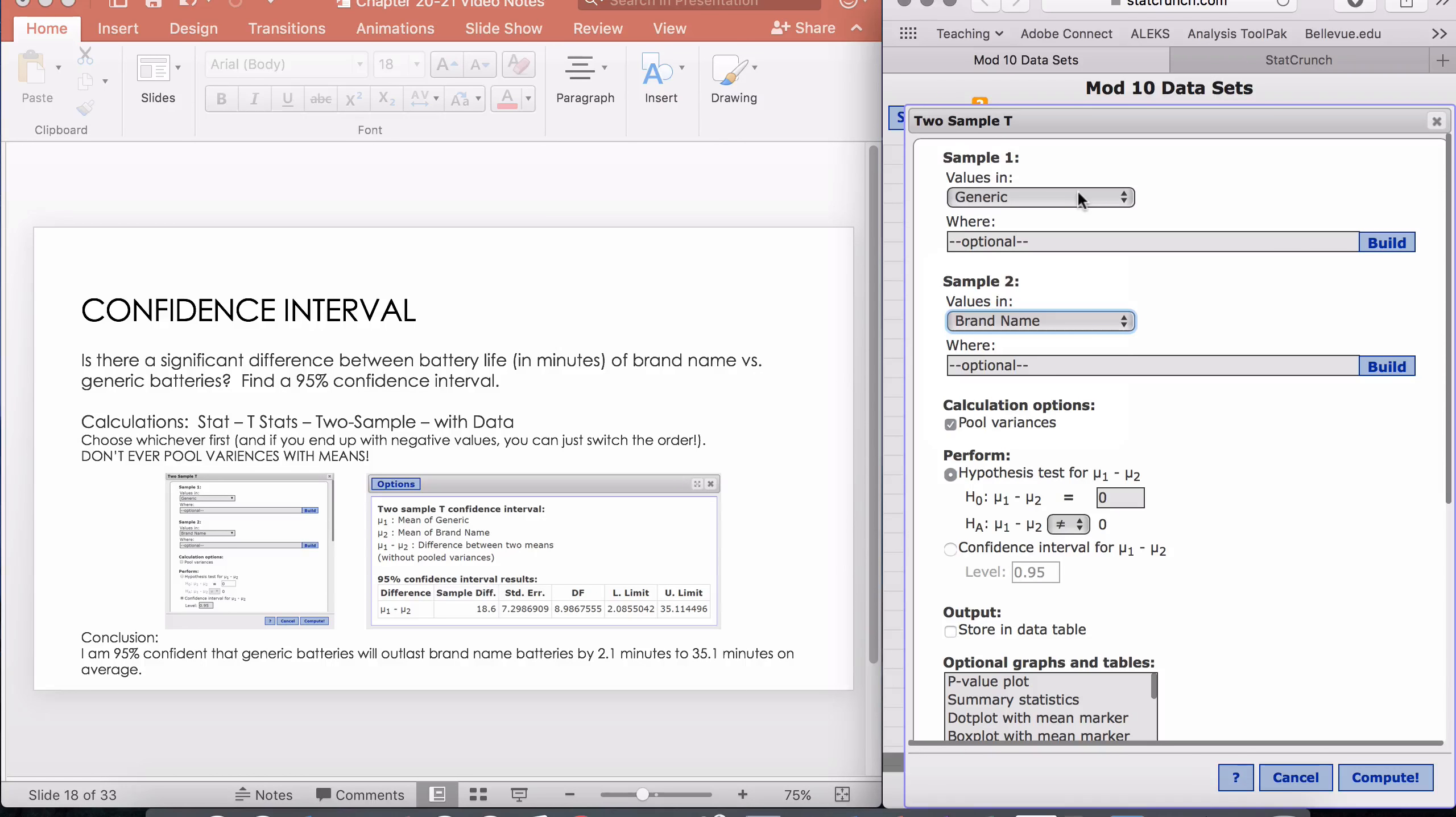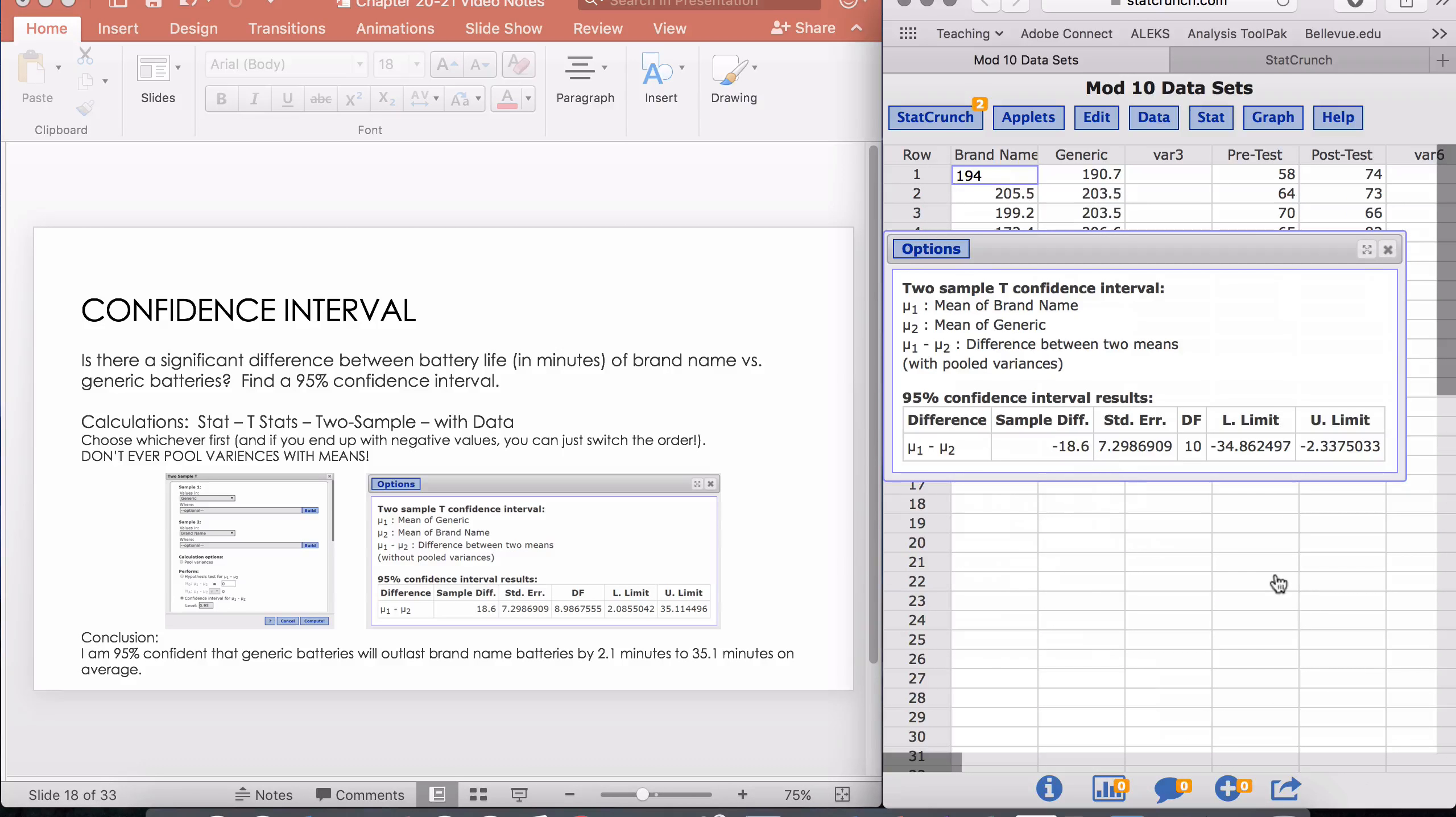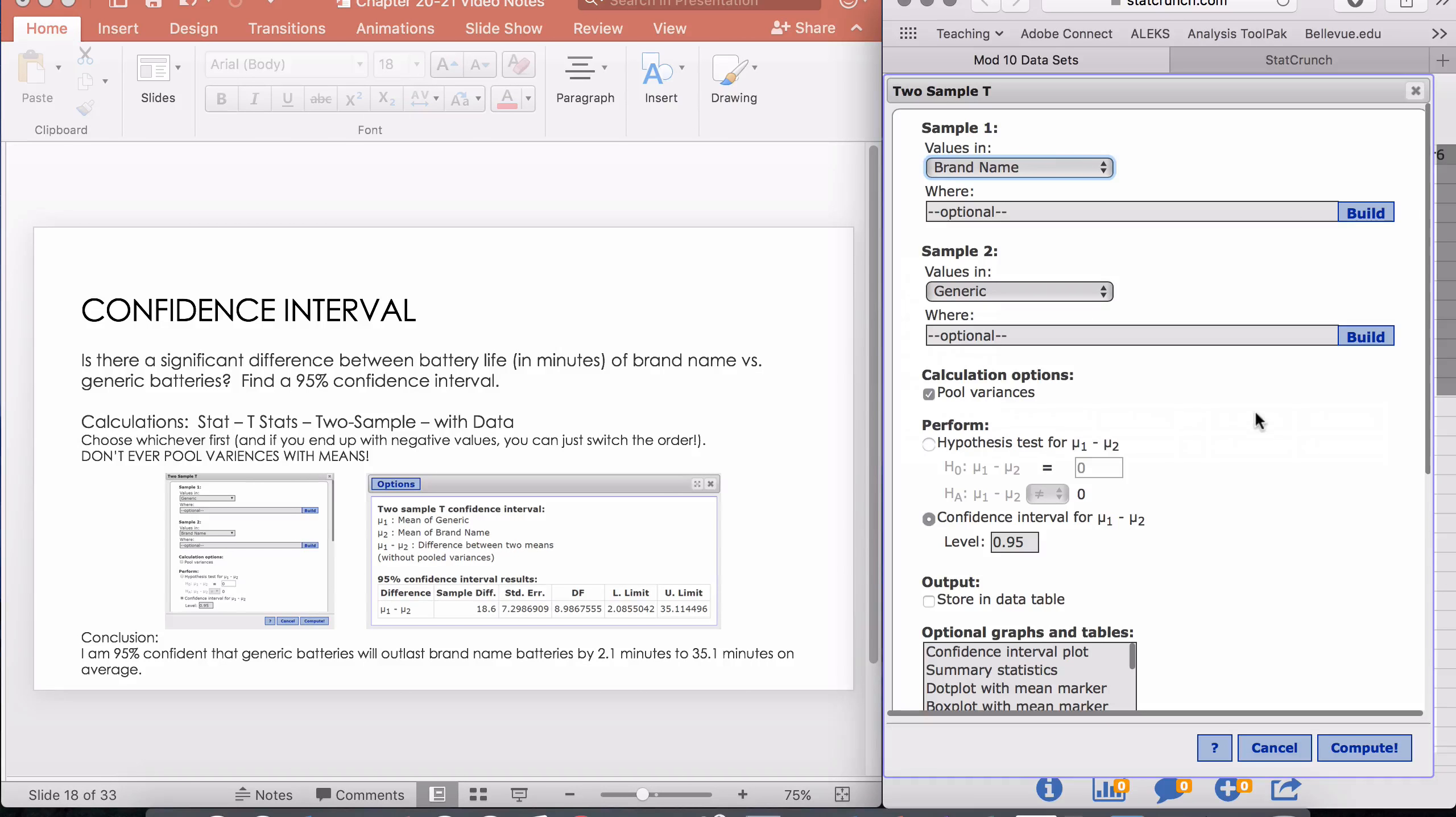What would happen if I did it backwards and did brand name first and generic second? Let's take a look at what that looks like. We're dealing with a 95% interval, so I'll go ahead and do it backwards first. Notice what I'm ending up with. Let me go back for just a moment before I confuse anybody.